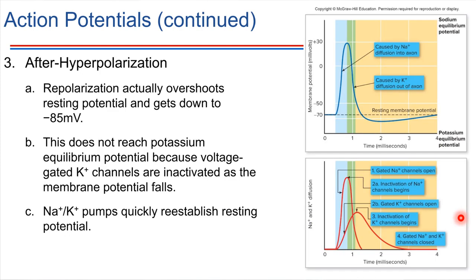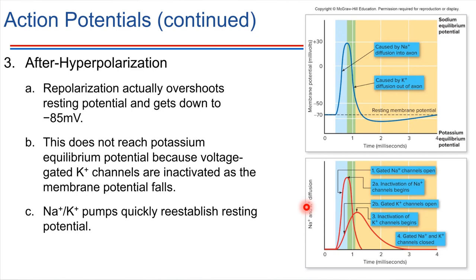So that's an action potential. There's a bit more on this slide about hyperpolarization, including a couple of different graph views. The top graph shows membrane potential and what's causing each section. The other graph splits up the ions, showing diffusion of sodium and diffusion of potassium individually, to elaborate on each ion's role in the process.